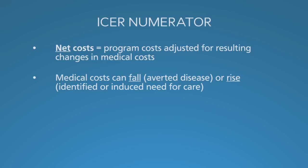On the other hand, sometimes an intervention can increase healthcare costs. If you have a screening program, you find people with disease. Obviously, you may start to treat them, or you have a plan to deliver antiviral therapy earlier in the disease. Added or earlier care will increase the healthcare costs. So when you put all of these factors together and compare the program costs to the healthcare costs, you arrive at the net cost of A — the cost of the program adjusted for induced costs or savings — minus the same type of net cost for B. That's the numerator.